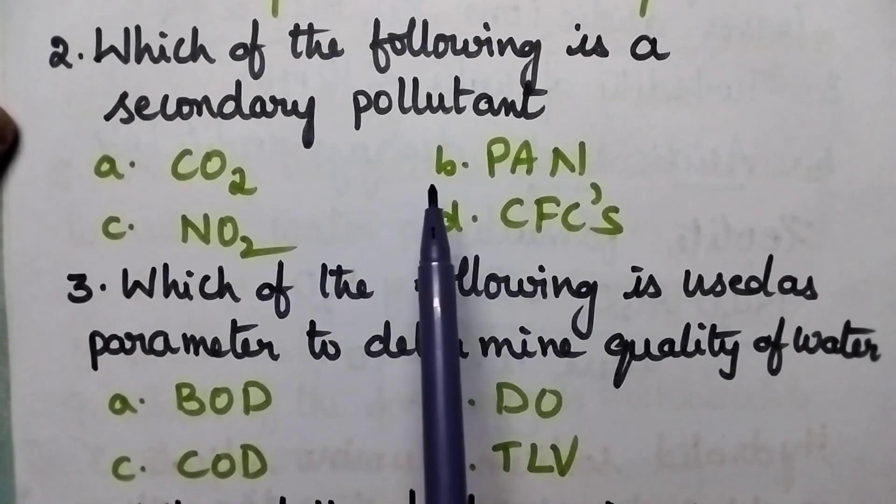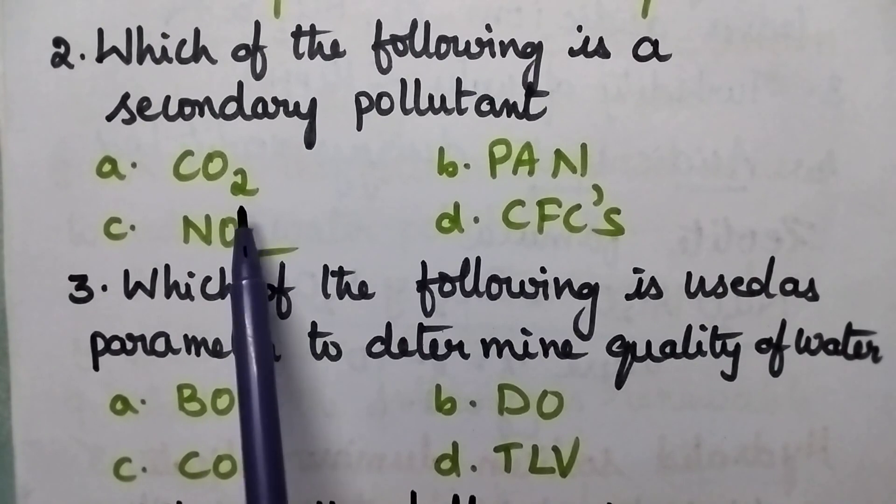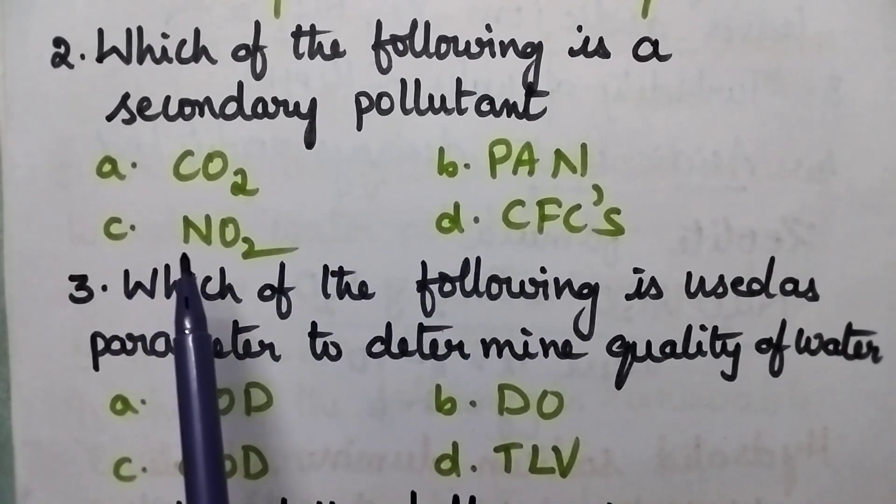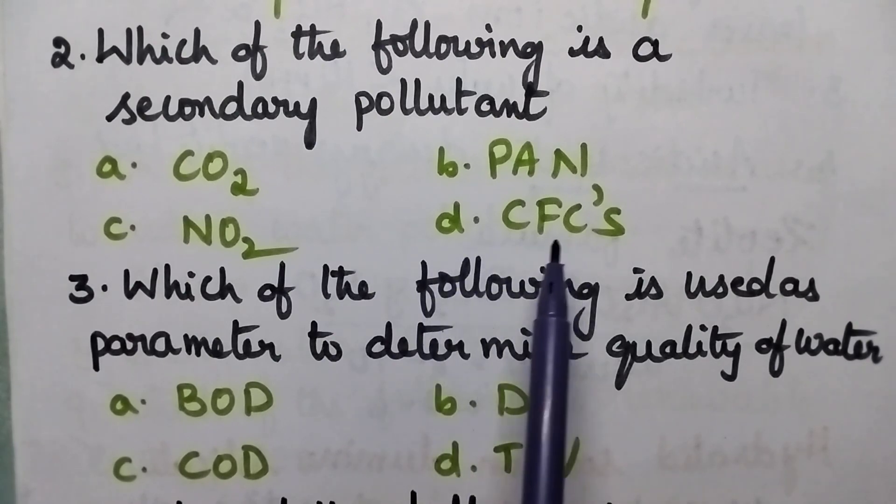Which of the following is a secondary pollutant? A: Carbon dioxide, B: PAN, C: Nitrogen dioxide, D: Chlorofluorocarbons.